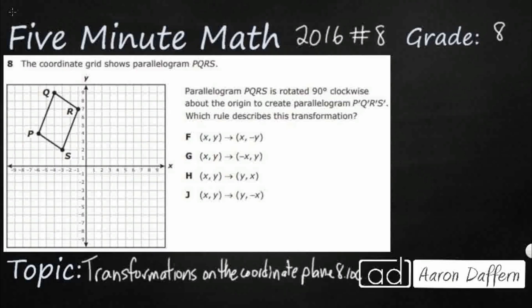We've got a parallelogram PQRS, and it's rotated 90 degrees clockwise. It's going to make a new parallelogram, so 90 degrees clockwise, that's a quarter turn, going to be rotated around that way. So it's going to be kind of pointing more to the right. But which of these rules describes that transformation? Well, if we don't have it memorized, we can always just kind of graph them and see what happens.